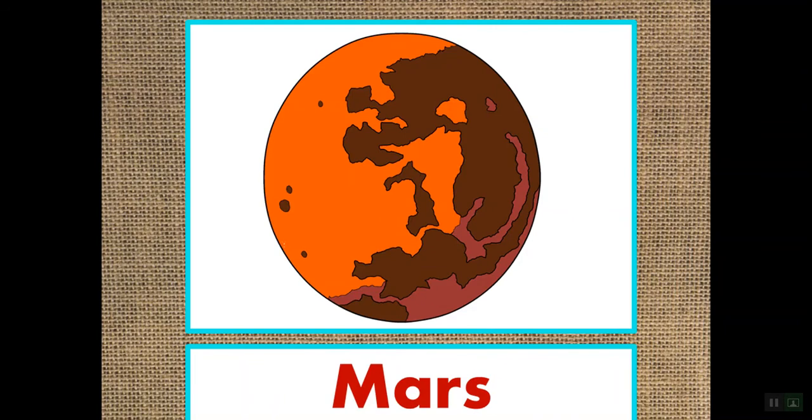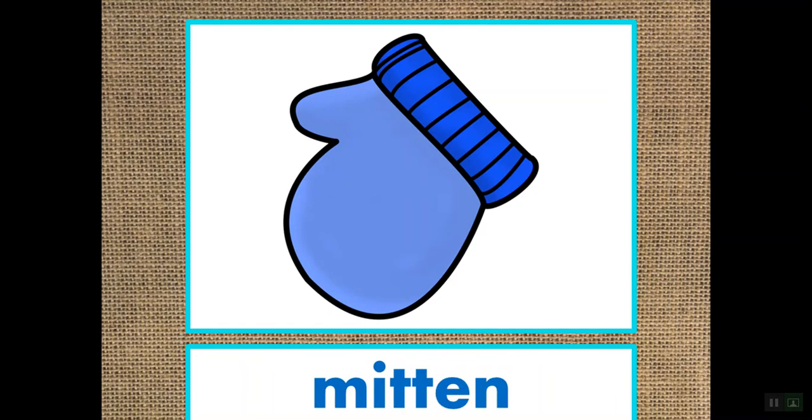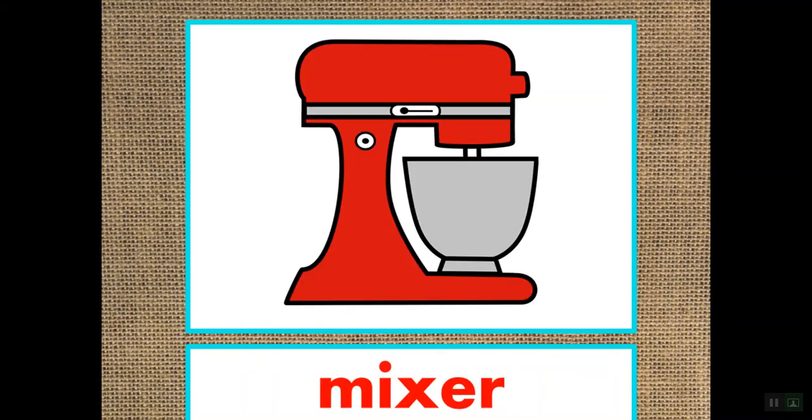Here we have another one of our planets in the solar system. This is Mars. Can you say Mars? Here we have milk. Milk starts with mmm and the letter M. Here we have a mitten. Mitten starts with M. This is a mixer. Can you say mixer? Very nice job. Mixer starts with M.